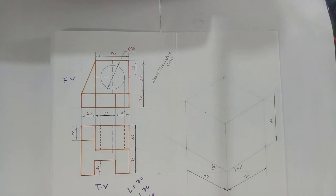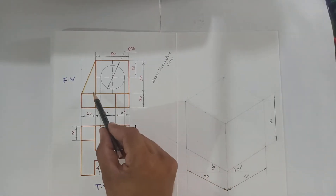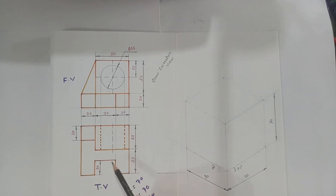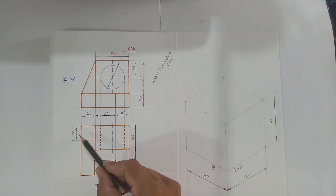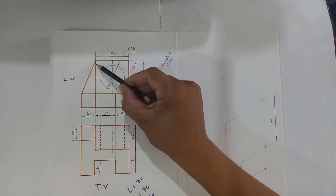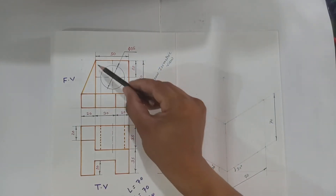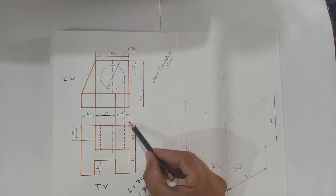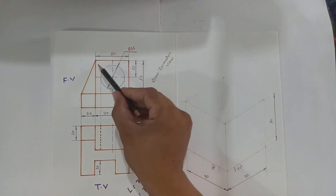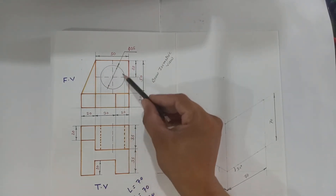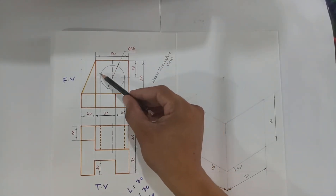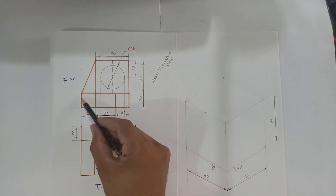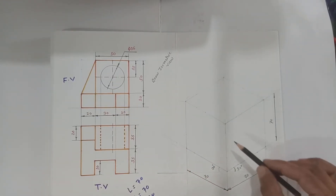Now let us divide this object into four parts. The first part is this portion — its view in the top view is here. The second part is this inclined part — its view in the top view is here. The third part is seen as a square in the front view and a rectangle of 50 by 35 in the top view. The fourth part is a circle having diameter equal to 35 mm, shown as a hidden line in the top view.